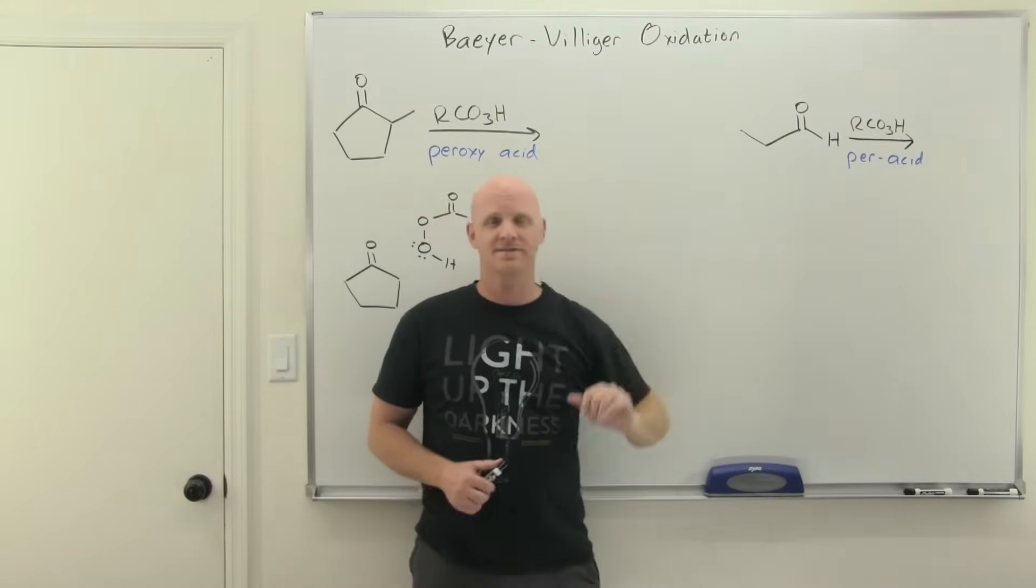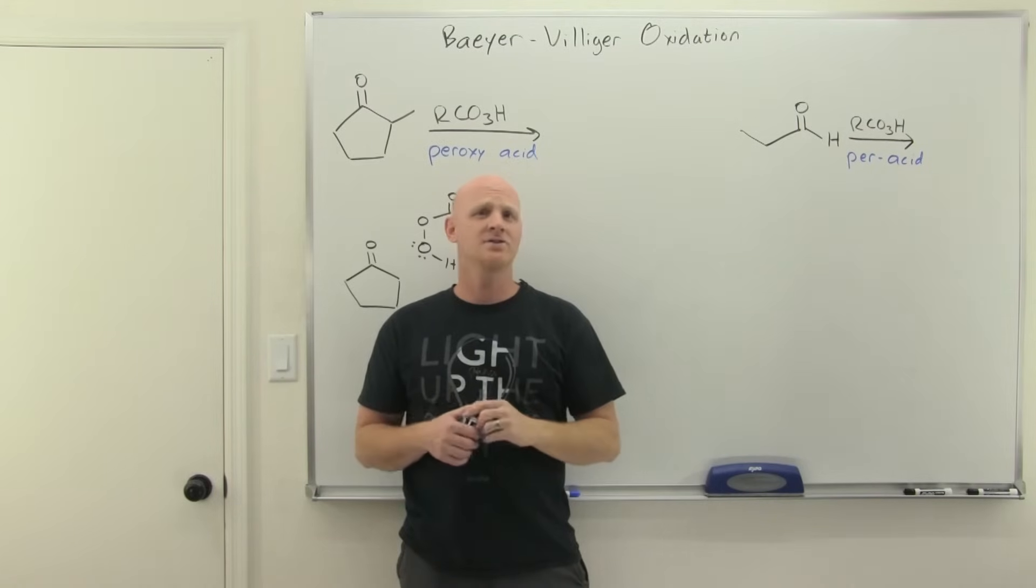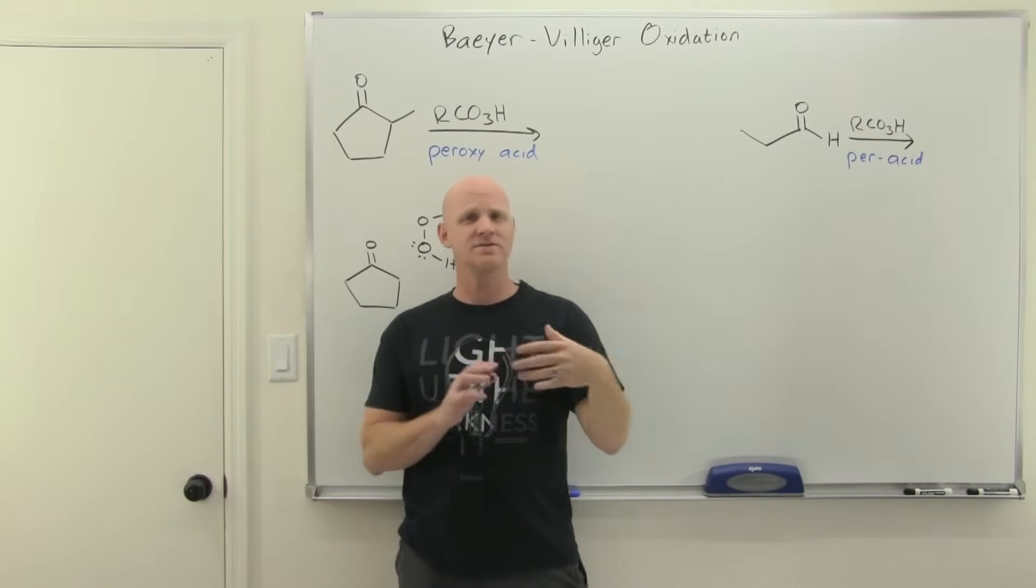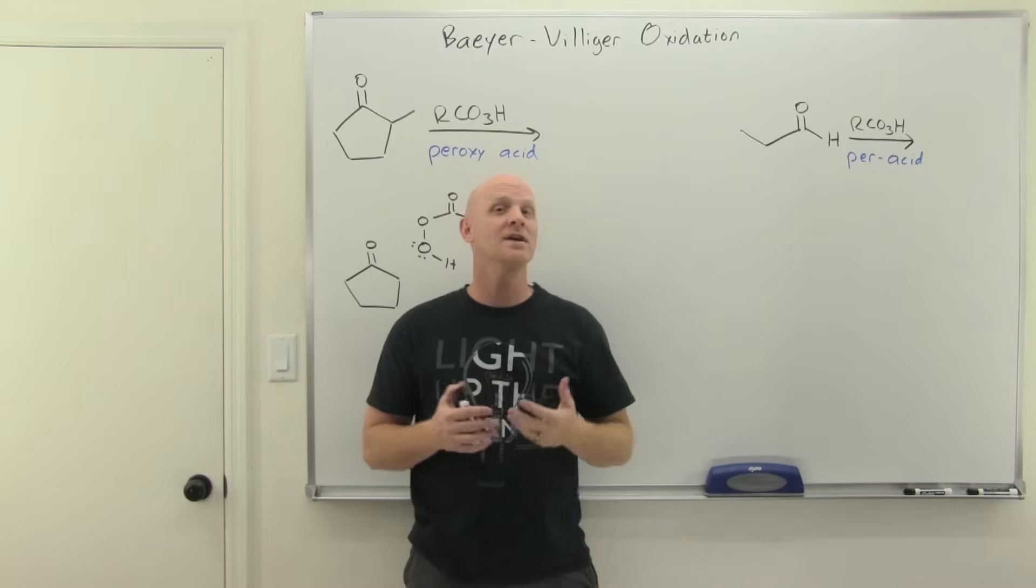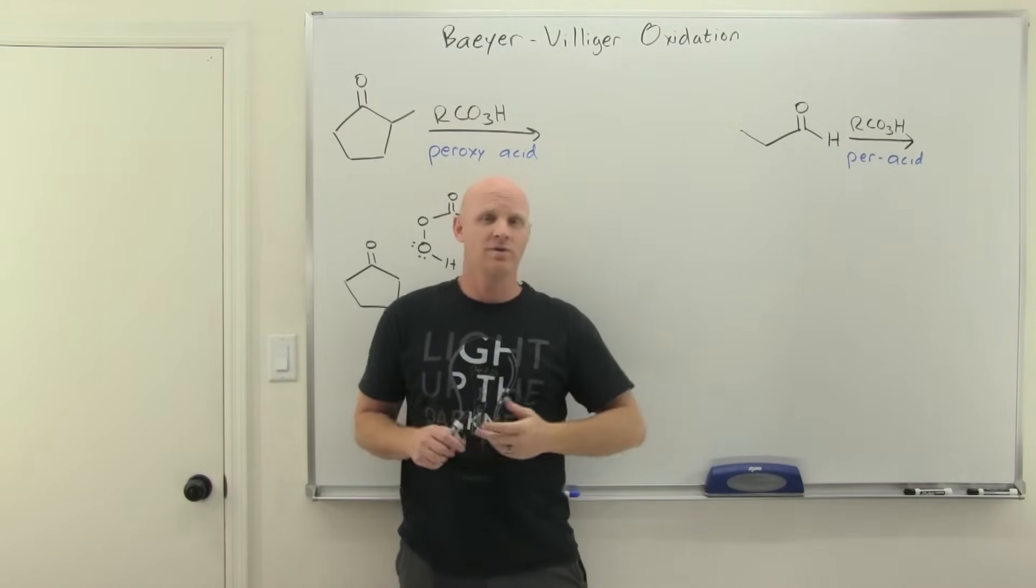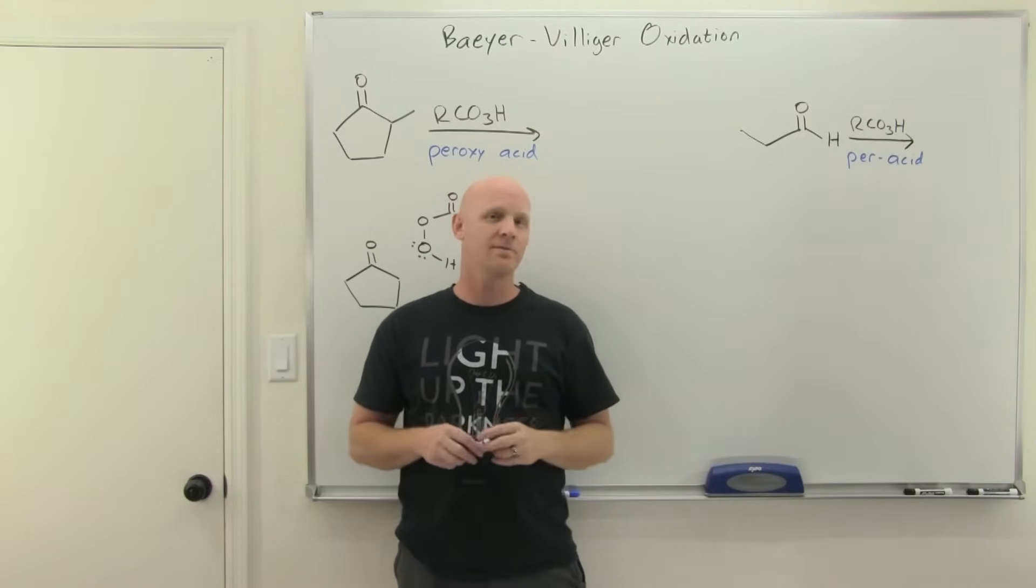Bayer-Villiger oxidation is the topic of this lesson. In the Bayer-Villiger oxidation, we convert a ketone to an ester or an aldehyde to a carboxylic acid using a peroxy acid. We'll talk about how to predict the products and cover the mechanism.